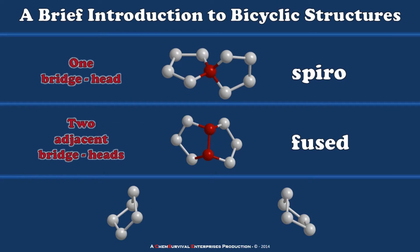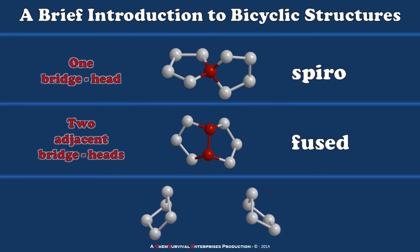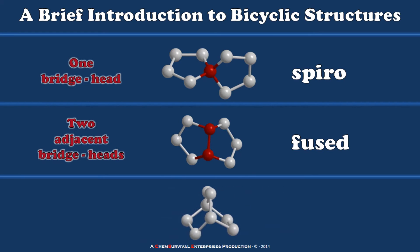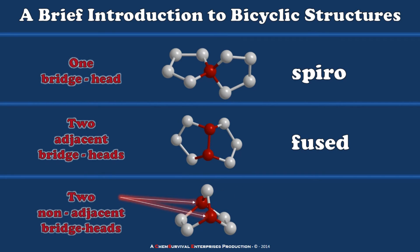And finally I can join the same two to create a bridged motif, which has two non-adjacent bridgeheads — so we call this bridged. This is the origin of the bicyclic name: you can create these by taking two simple cyclic structures and joining them together in a specific way.